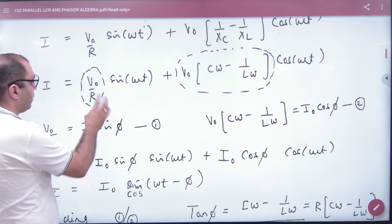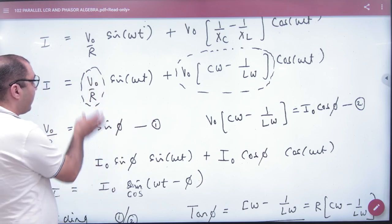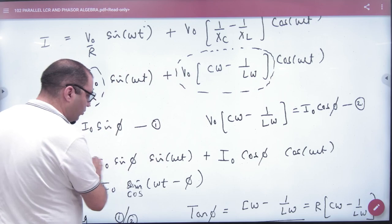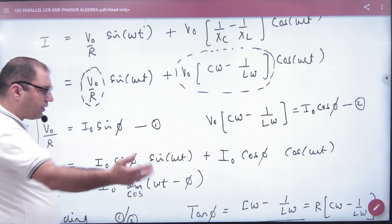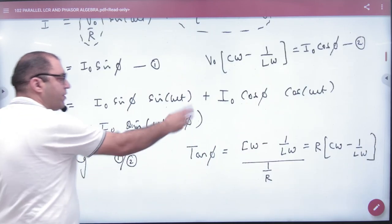So I have this term with I₀ sin(φ), I₀ cos(φ). If we add the maximum, the answer will be I₀ cos(ωt - φ).